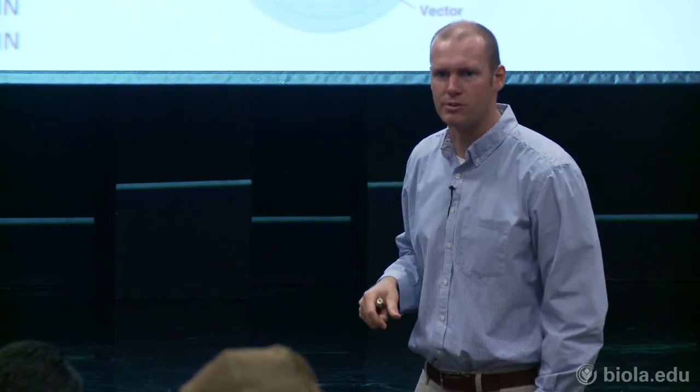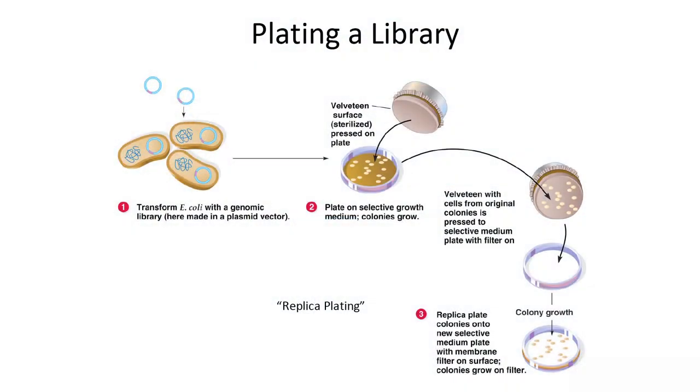A library is taking all of these random fragments and cloning them into vectors of some sort. For a genomic library, the first step is to generate big pieces of the genome and put them into BACs — bacterial artificial chromosomes — to get big chunks. You can then sub-clone further by fragmenting that big piece and putting it into smaller plasmids.